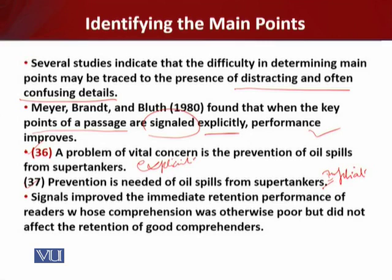The researchers found that signals improved the immediate retention performance of readers whose comprehension was otherwise weak or poor, and especially those readers who did not share the schema of the author. However, the results show that explicit signals did not affect the retention of good comprehenders. So points signaled explicitly cause improvement in reading comprehension performance for weaker readers.